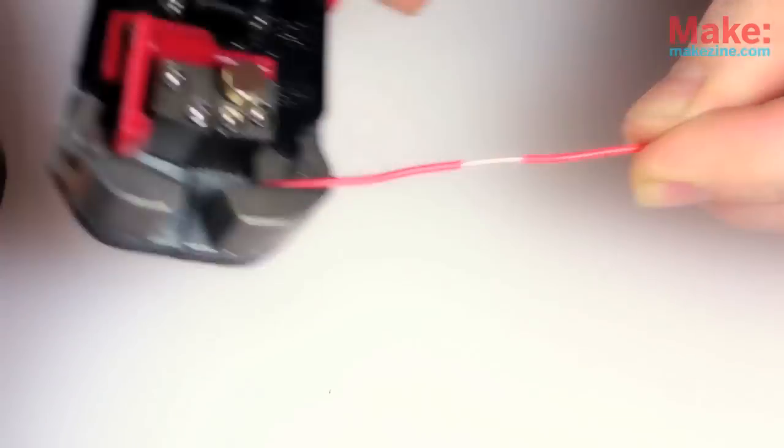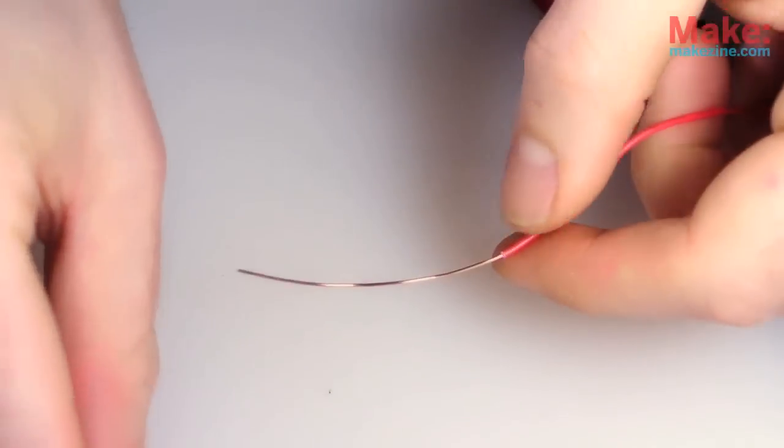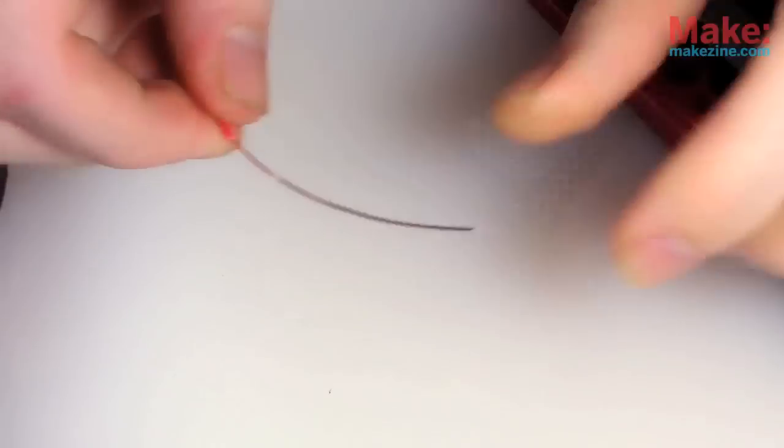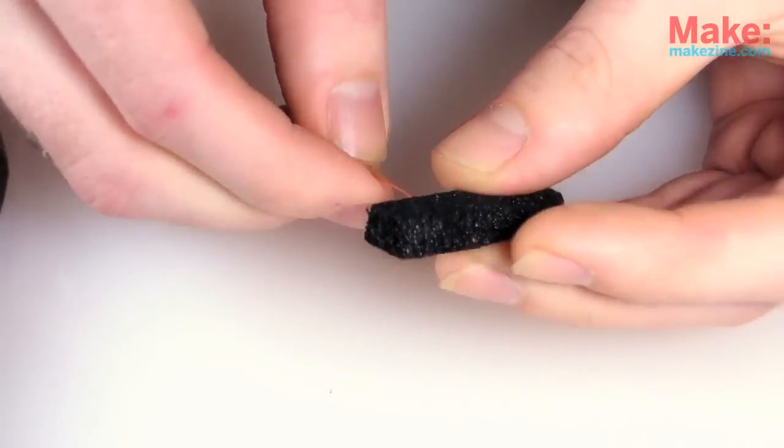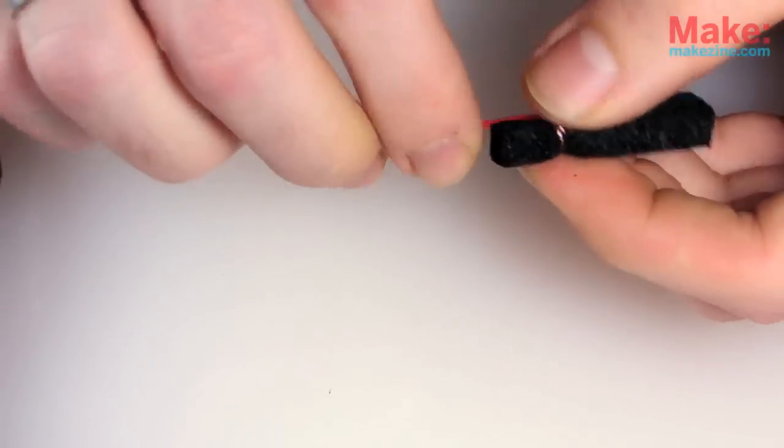I'll strip one to two inches of insulation from the end of a foot-long piece of wire, run that through and around the foam a few times till it's nice and secure.